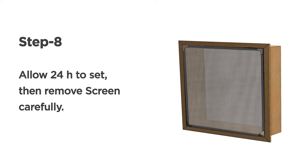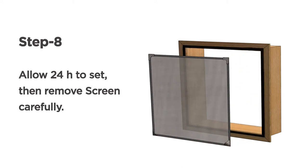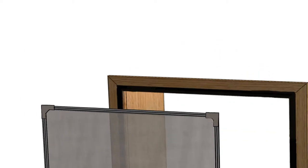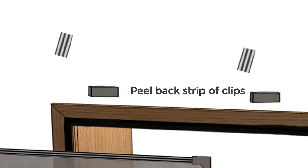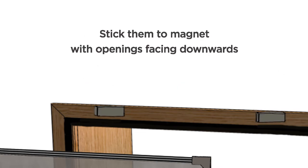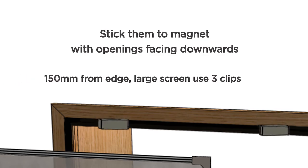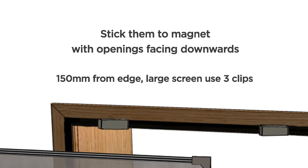Step eight, leave to dry. Then carefully remove the screen. Peel the backing strip off the clips, and stick them to the top magnet with the opening facing downwards, approximately 150 millimetres in from the edge.